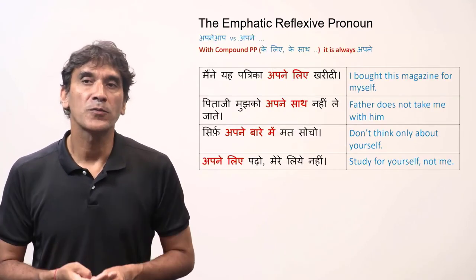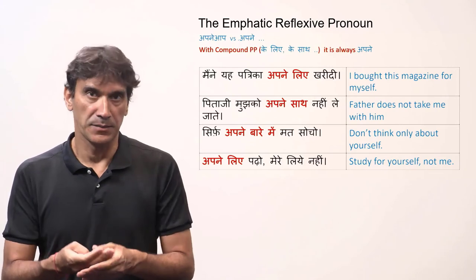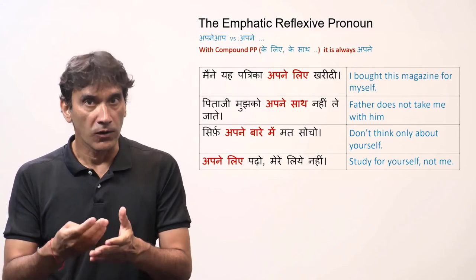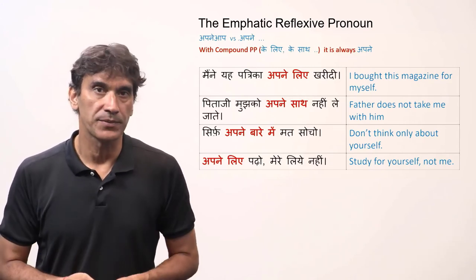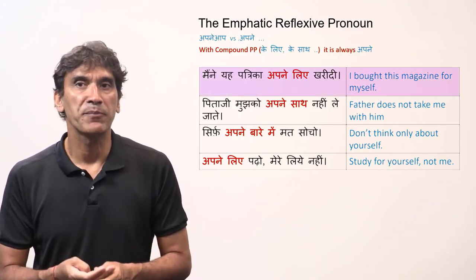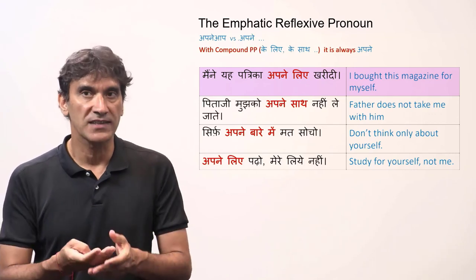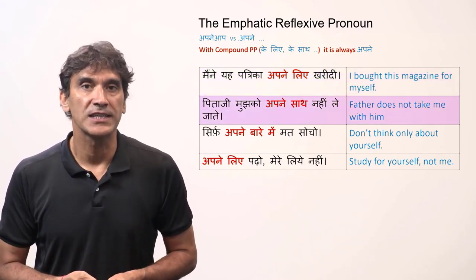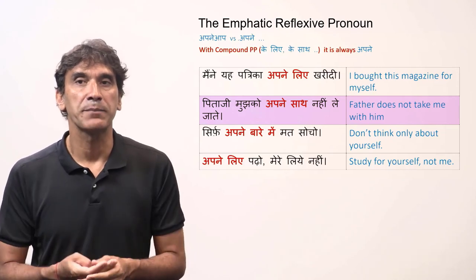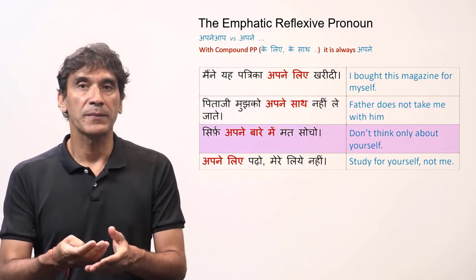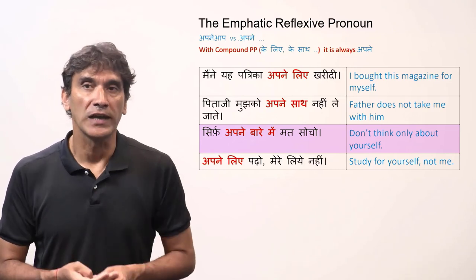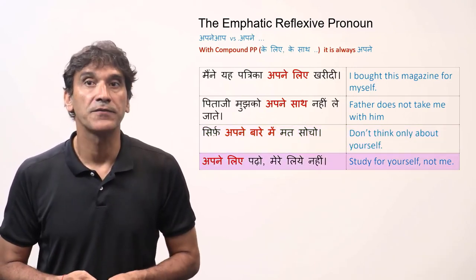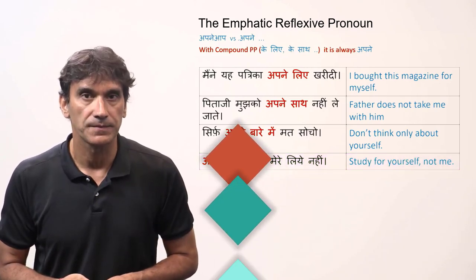With compound postpositions such as 'ke liye' (meaning 'for') and 'ke saath' (meaning 'with'), the reflexive pronoun is always 'apne,' never 'apne aap.' Examples: Maine ye patrika apne liye kharidi — I bought this magazine for myself. Pita ji mujhko apne saath nahi le jaate — father does not take me with him. Sirf apne baare mein mat socho — do not think only about yourself. Apne liye padho, meri liye nahi — study for yourself, not for me.